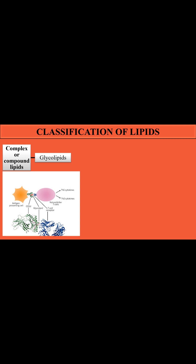Glycolipids are involved in cell recognition. When carbohydrates are attached with lipids, they act as markers on the surface of the cell. Every cell and every species has a unique glycolipid marker used for identification, distinguishing between the cell and microorganisms.